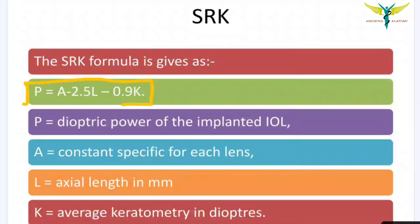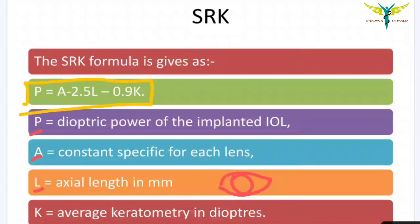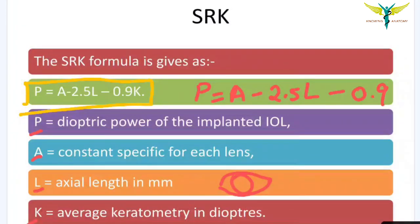The SRK formula is: P = A − 2.5L − 0.9K, where P stands for the power of the implanted intraocular lens, A stands for the constant specific for each lens, L stands for the axial length of the eyeball, and K stands for average keratometry in diopters. This SRK formula is used to determine the power of the IOL.